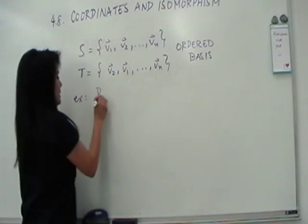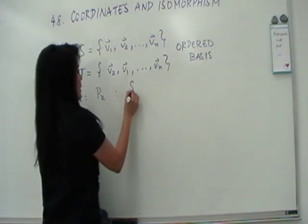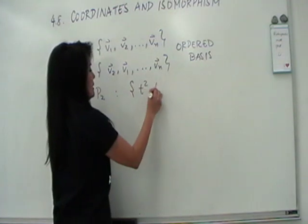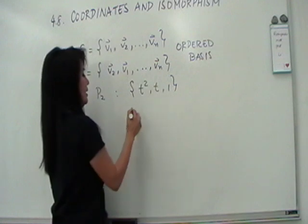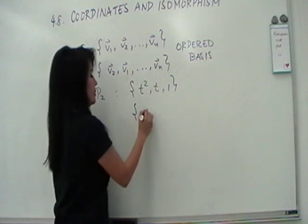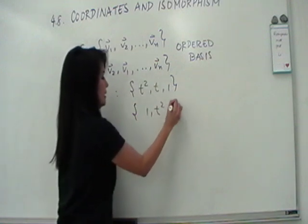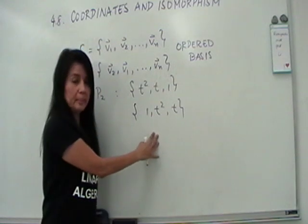If you talk of the natural basis T squared T and 1, that's an ordered basis. But if I, let's say, write this as 1, T squared, and T, this is a different ordered basis.